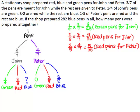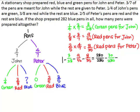We have found the fraction of pens that are John's green pens and the fraction of pens that are red pens for John and Peter. We will now find the fraction of pens that are blue pens. We take the total number of pens represented by one whole and subtract three over twenty-eight, nine over fifty-six, and eight over thirty-five. Converting to a common denominator of 280, we get 280 over 280 minus thirty over 280 minus forty-five over 280 minus sixty-four over 280, which gives us 141 over 280. This is the fraction of pens that are blue pens.